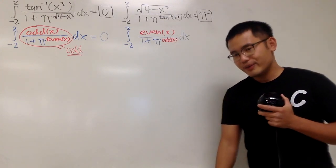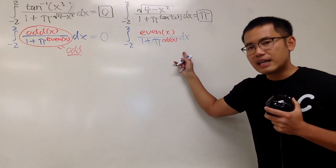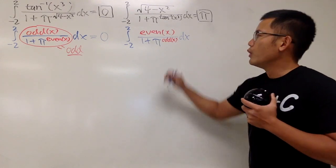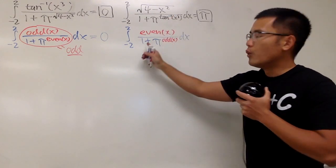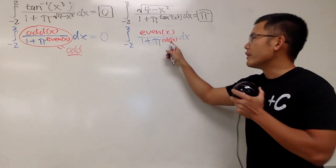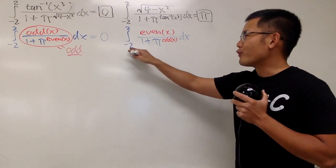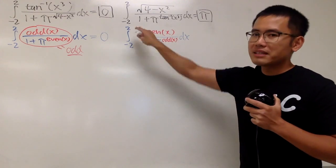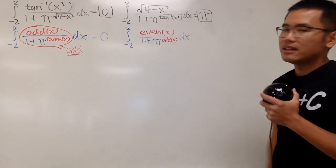Well, well, this right here is actually in a really nice form. We have an even function over 1 plus some number to an odd function power. And, of course, we go from negative a to positive a, right? In that case, a is 2.